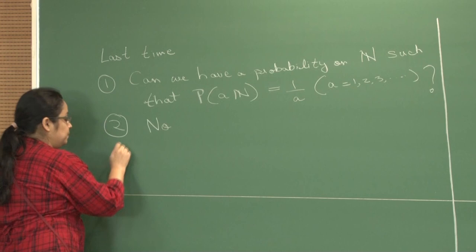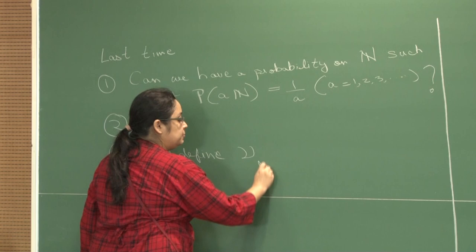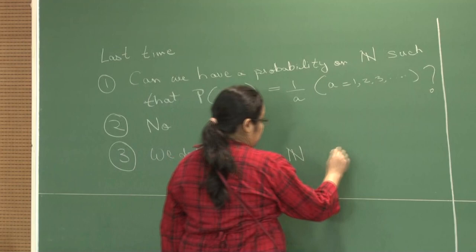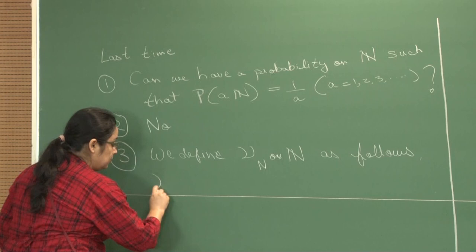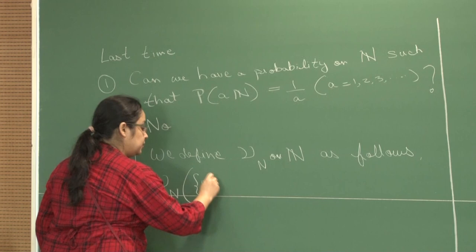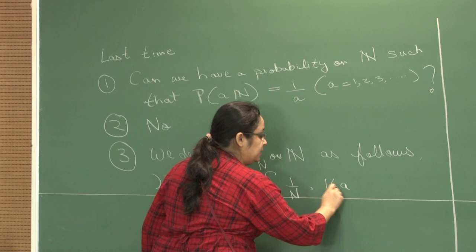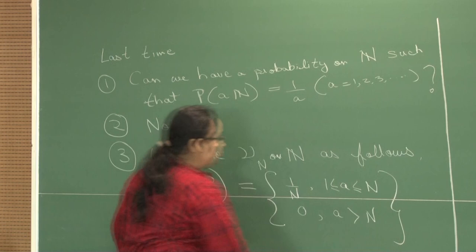Instead, what did we do? We defined the following measure — probability ν_N on the set of natural numbers — as follows. Between the first N numbers, ν_N of some number a is equal to 1/N if a lies between 1 and N, and outside of this it is just 0. You can check that this indeed defines a probability.